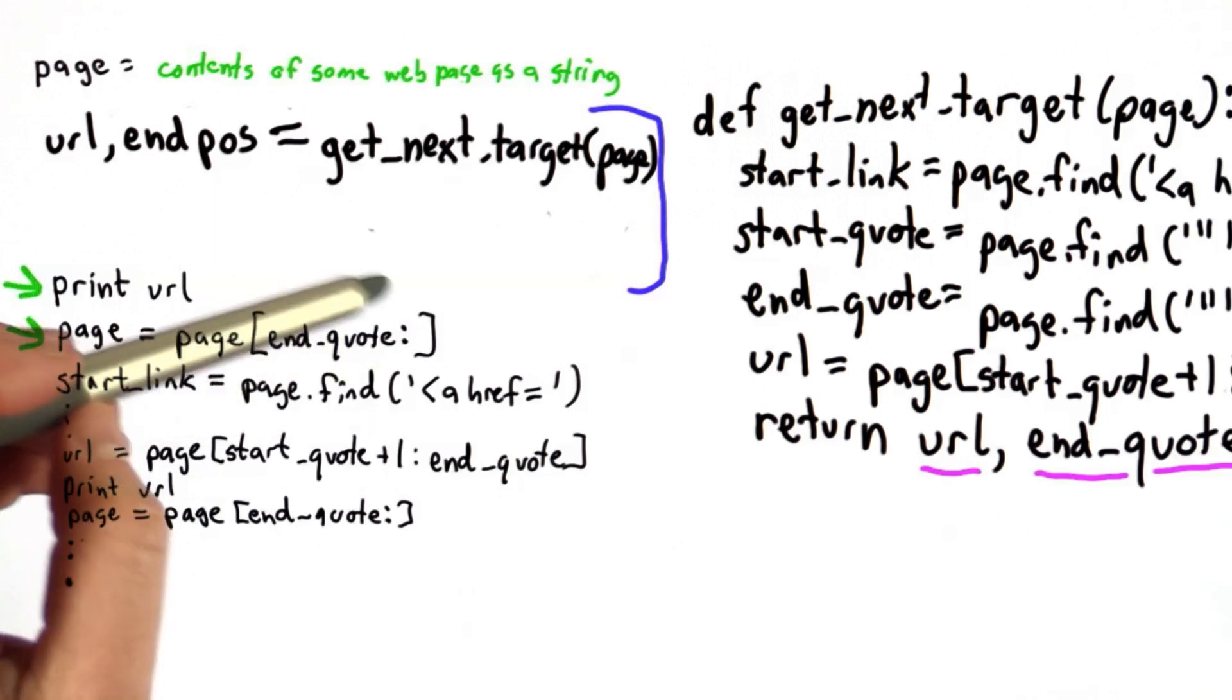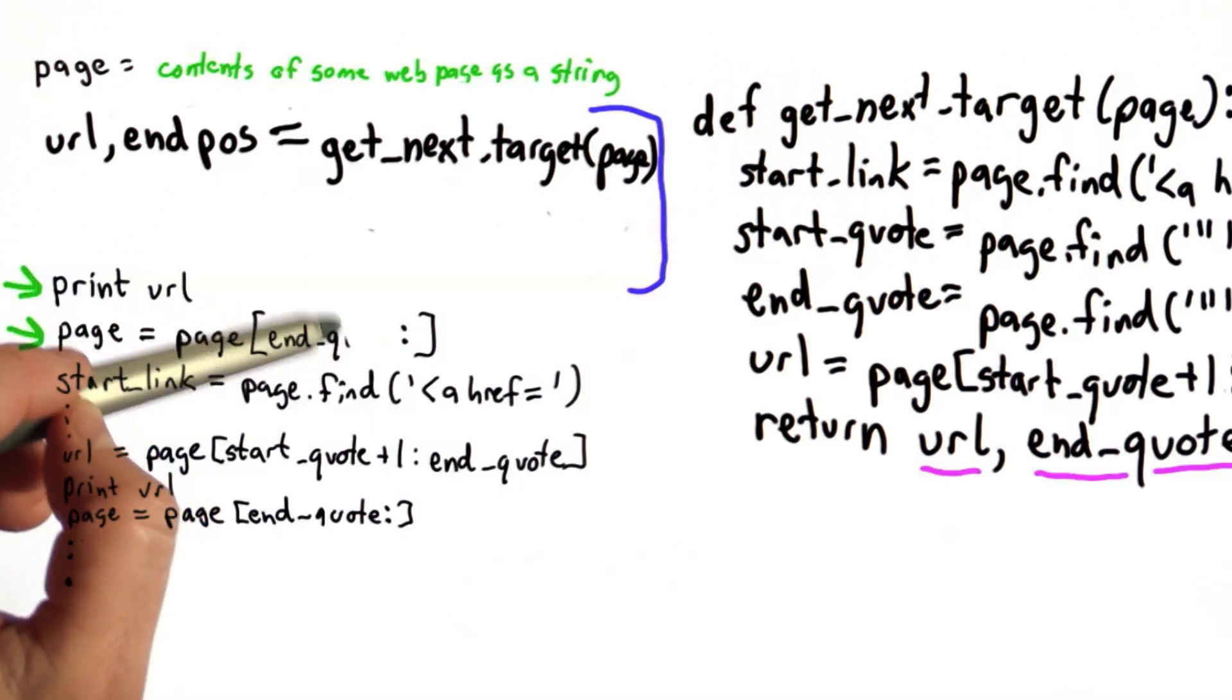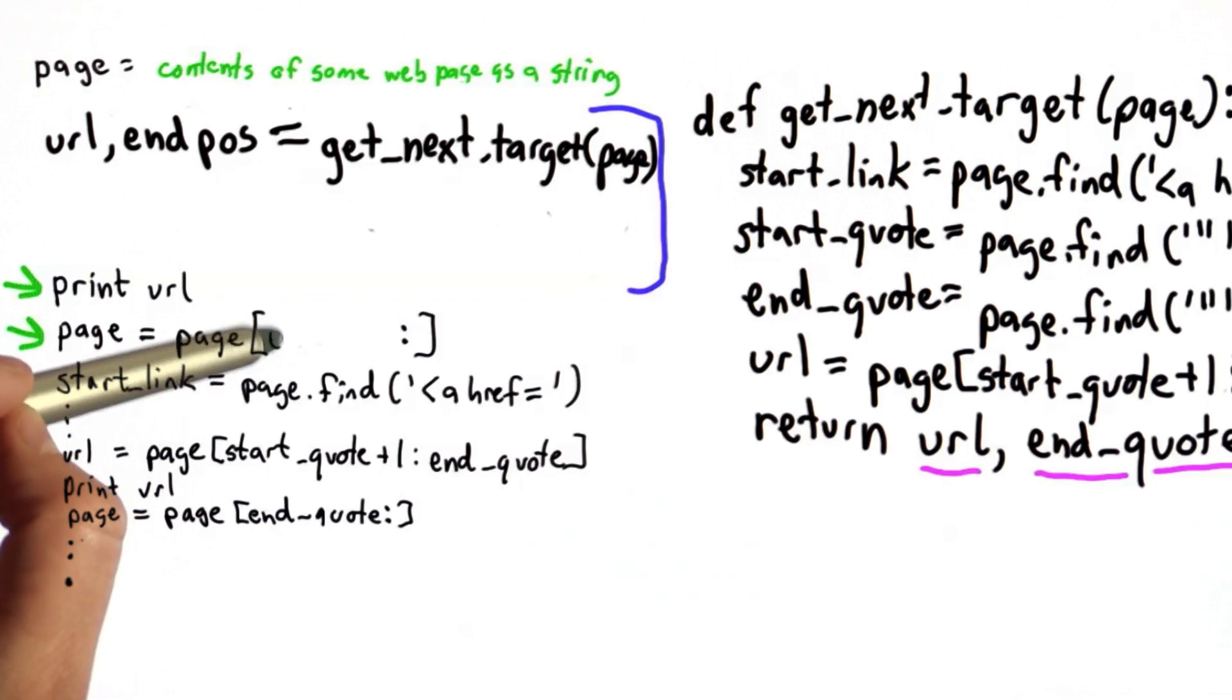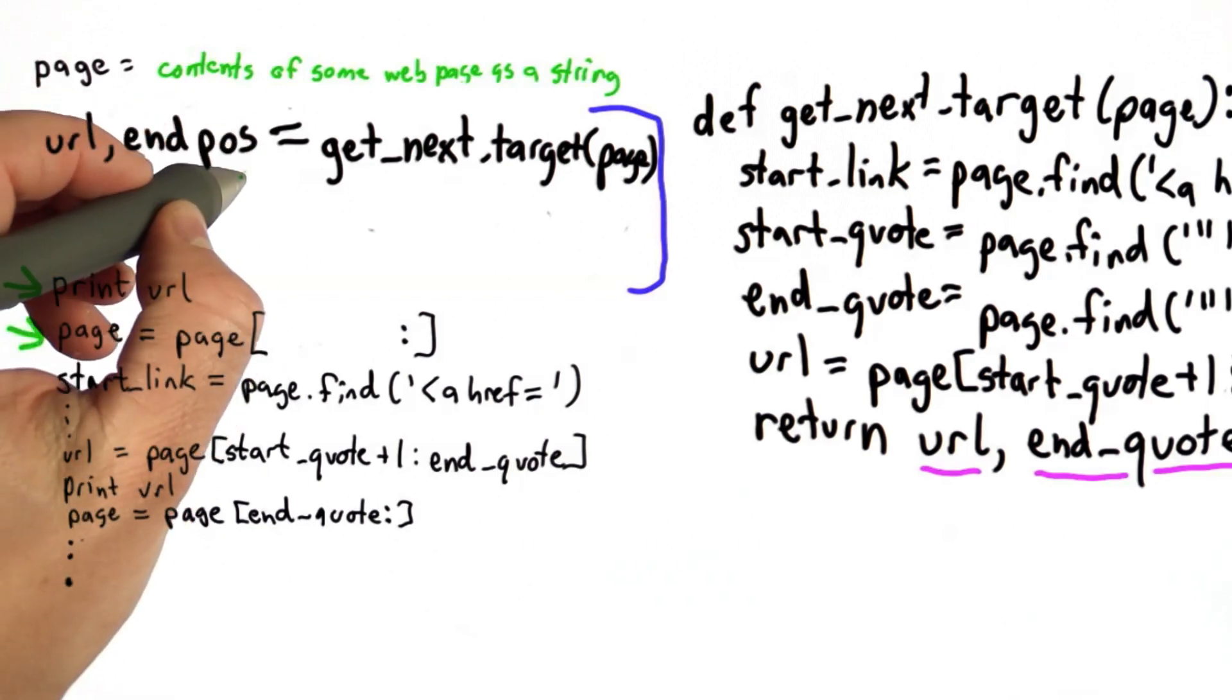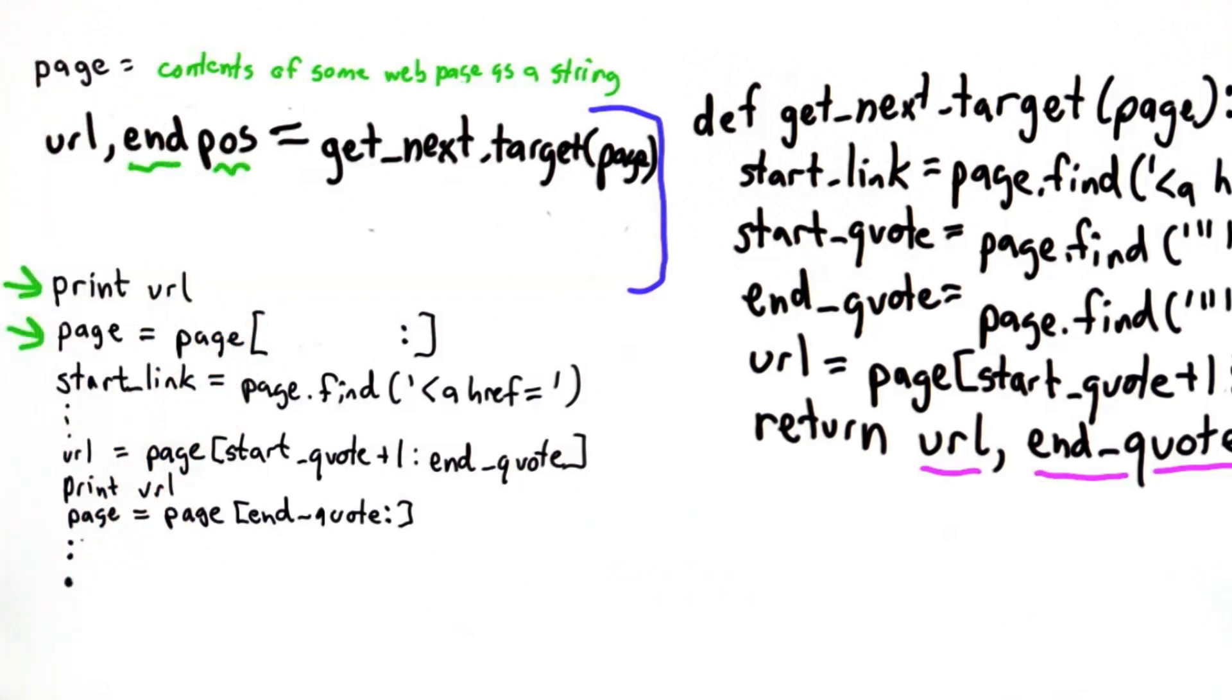And we still want to update the value of page, but we don't want to use end quote now. What we want to use is the value that was returned here, which we've assigned to the variable endPause.